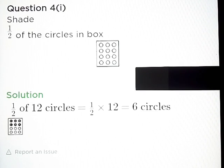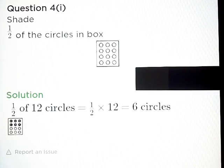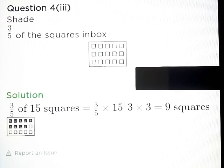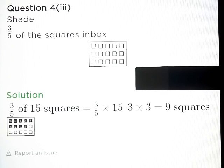Question number 4, Part A: Shade 1 upon 2 of the circles in the box. Answer: 1 upon 2 of 12 is equal to 6 circles. Part B: 2 upon 3 of the triangles in the box — answer is equal to 6 triangles. Part C: 3 upon 5 of the squares in the box — 3 upon 5 of 15 is equal to 9 squares.